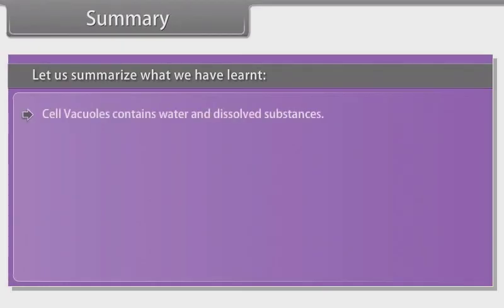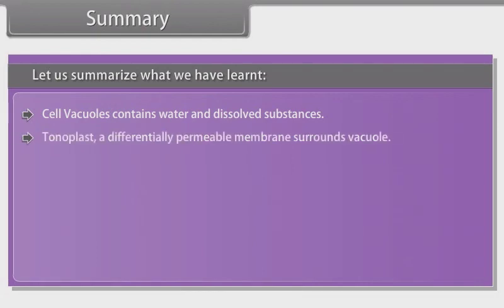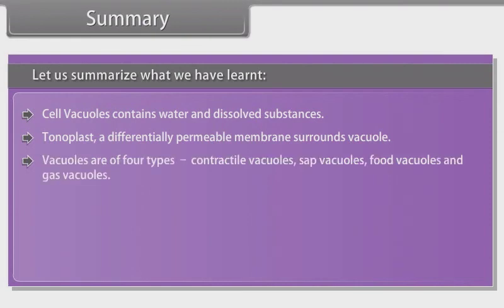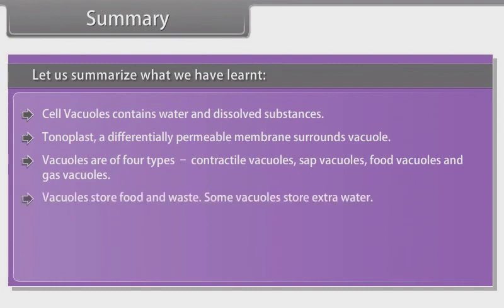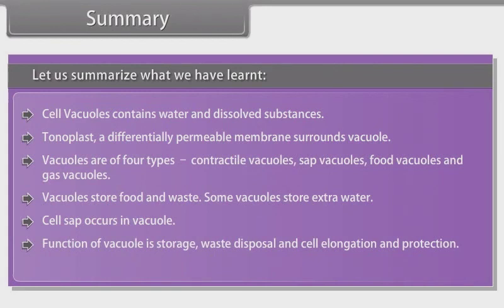Cell vacuoles contain water and dissolved substances. Tonoplast, a differentially permeable membrane, surrounds the vacuole. Vacuoles are of four types: contractile vacuoles, sap vacuoles, food vacuoles, and gas vacuoles. Vacuoles store food and waste, and some vacuoles store extra water. Cell sap occurs in the vacuole. Functions of the vacuole include storage, waste disposal, cell elongation, and protection.